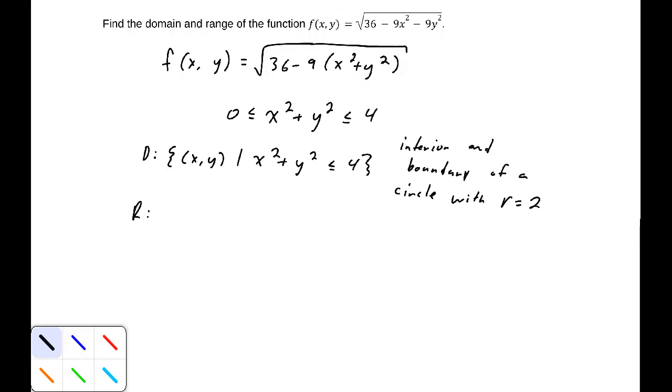Now our range: because x² + y² must be between 0 and 4, if x² + y² equals 0, then f(x,y) = 6. So the upper boundary on our range is 6. But if x² + y² equals 4, then f(x,y) = 0. So our range is [0, 6].